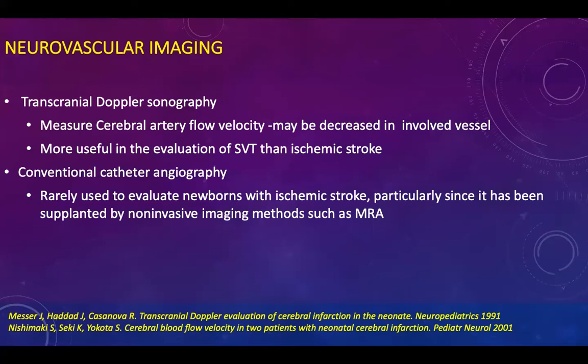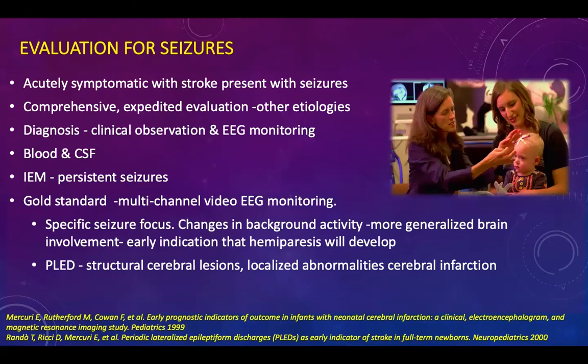Neurovascular imaging also includes transcranial Doppler sonography and conventional catheter angiography, though these modalities are rarely used. Conventional catheter angiography is technically challenging and high risk. Transcranial Doppler sonography measures cerebral artery flow velocity, which may be decreased in the involved vessel and can have some utility.